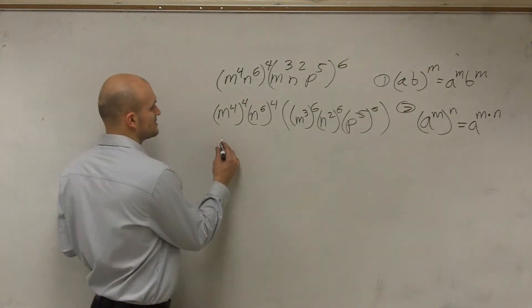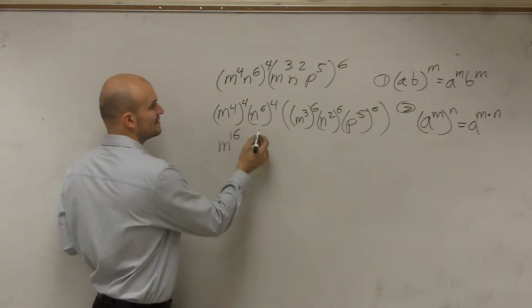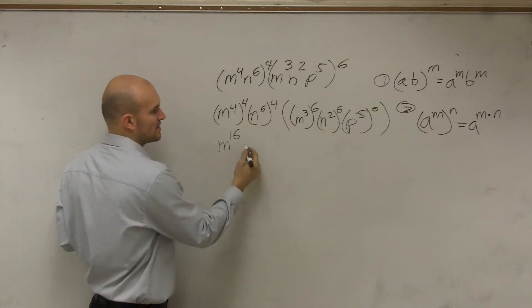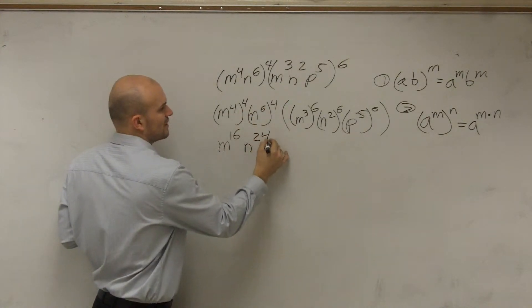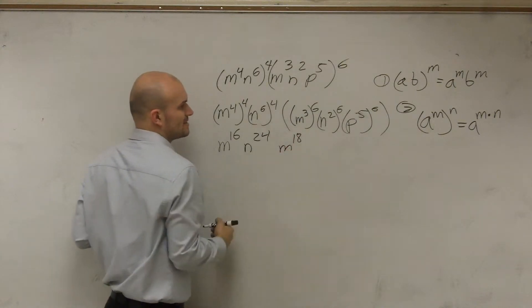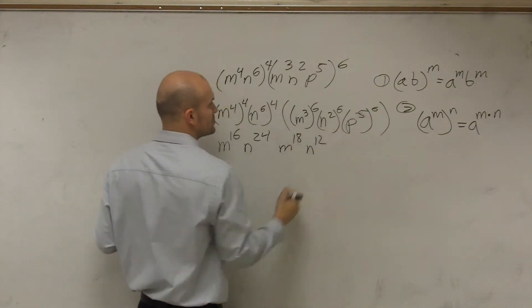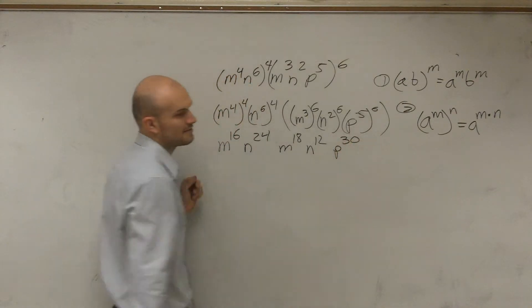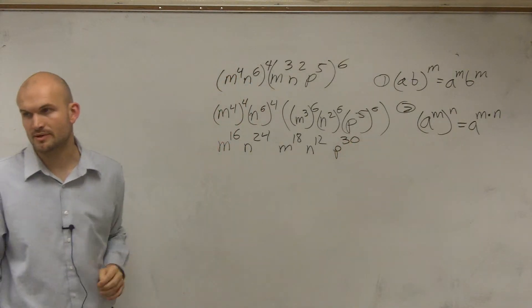So now what I have is m to the 16th, because now I'm just multiplying my exponents, n to the 24th, m to the 18th, n to the 12th, and p to the 30th. So you just multiply your exponents.